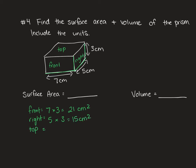To find the top, we would multiply 5 times 7, so we'd have the 5 on this side and the 7 across the front, which gives us 35 centimeters squared.